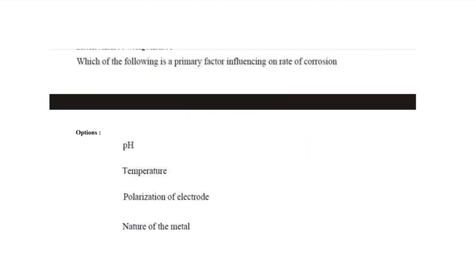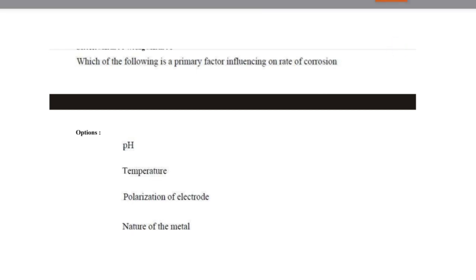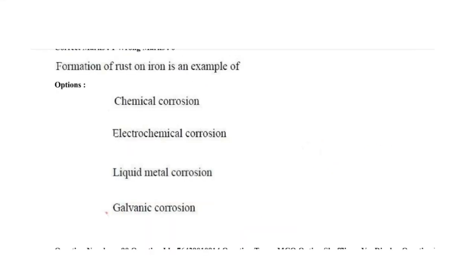Next question: which of the following is a primary factor influencing the rate of corrosion? The options were pH, temperature, polarization of electrode, and nature of the material. While all options can increase the rate of corrosion, the primary factor is the nature of the metal — how the nature of the metal decides the rate of corrosion. So option 4 is correct.